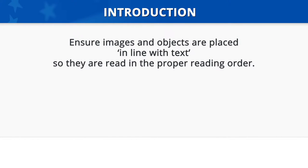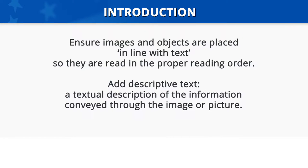One requirement is to ensure images and objects are placed in line with text so that assistive technology can read them in the proper reading order. Another requirement is to add descriptive text to those same images and objects. Descriptive text is simply a textual description of the information conveyed through the image or picture.